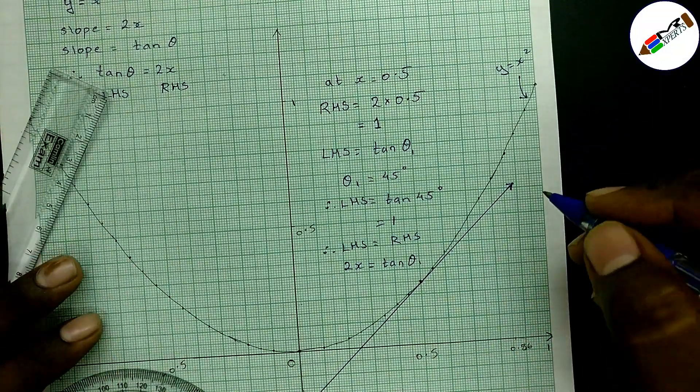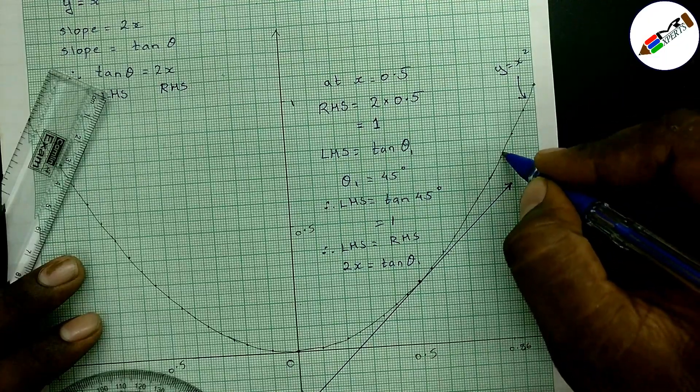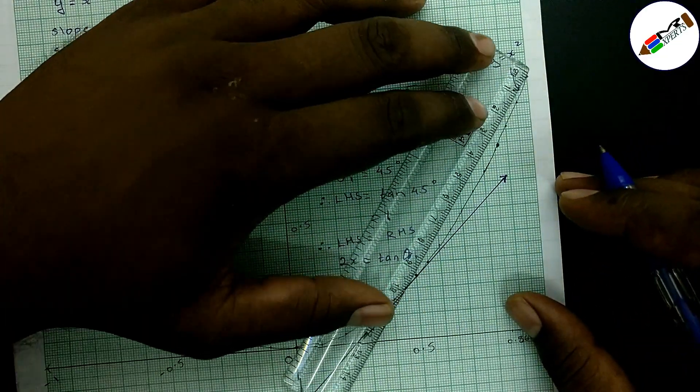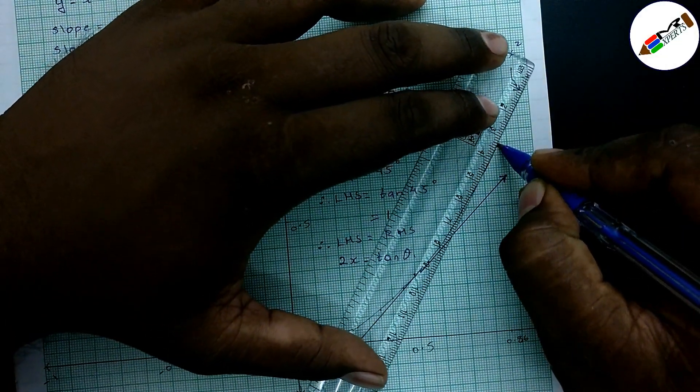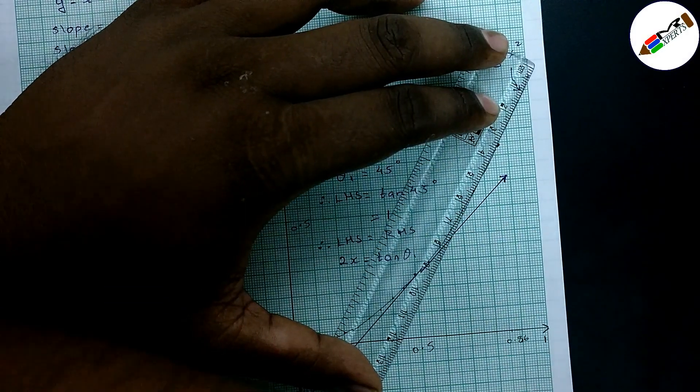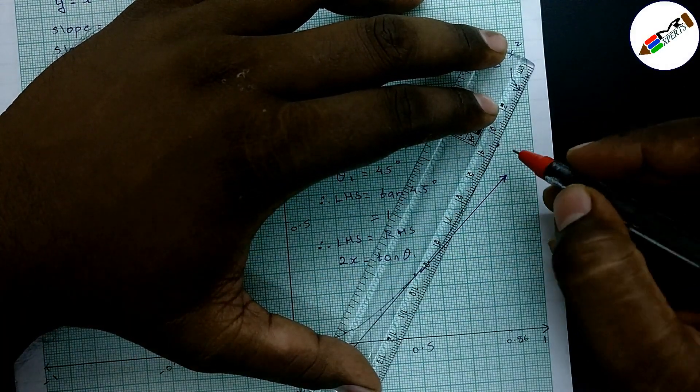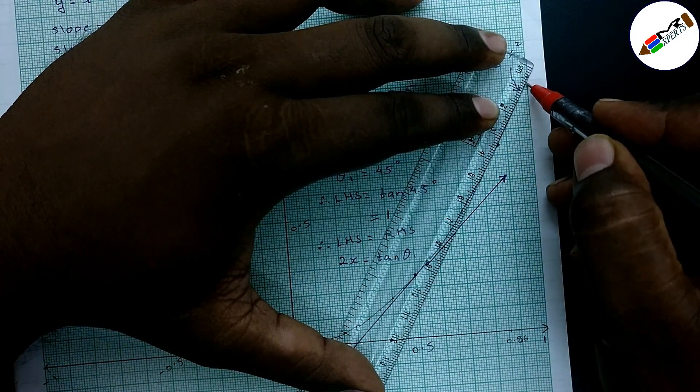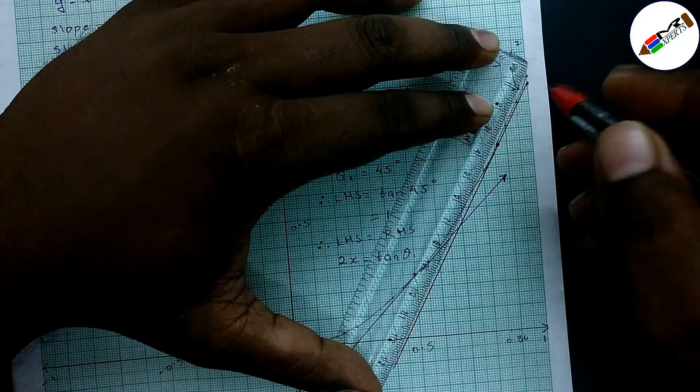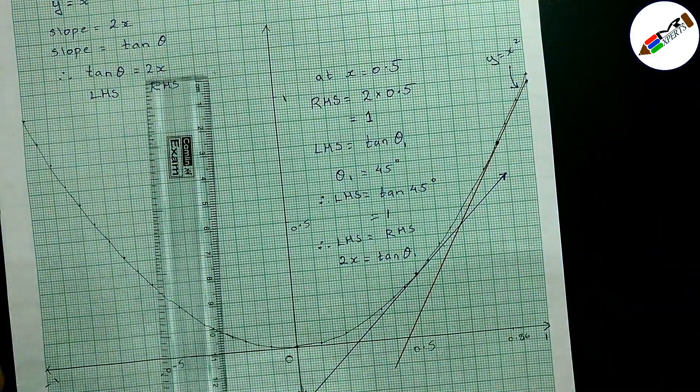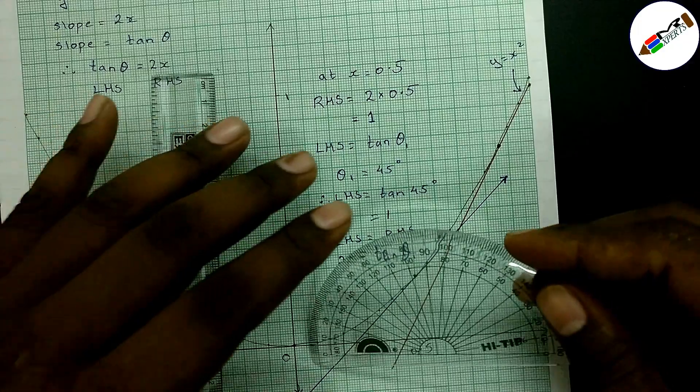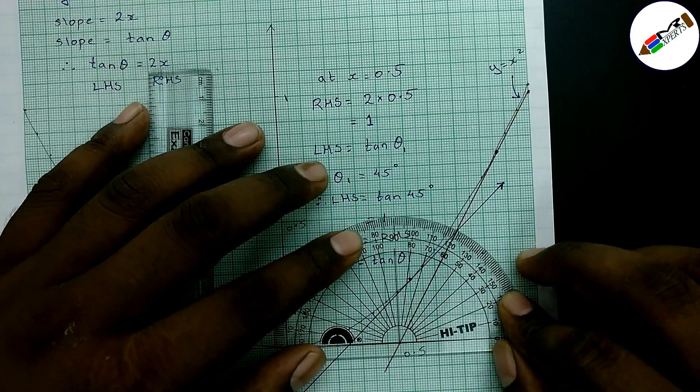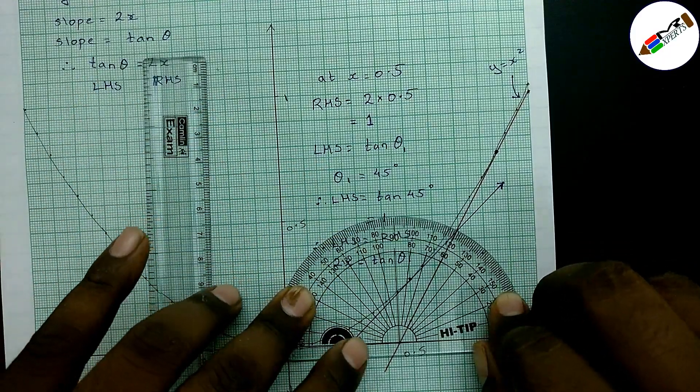In this case theta 1. Now, for different values of x there should be different value of tan theta. Let me mark another point. Here it is second point which is x is equal to 0.86 and let us try and draw a tangent over that point. Watch closely. We are drawing the tangent. Here the tangent is drawn. Now, this tangent will also make some angle with the positive direction of x axis. Let us measure that. As you can see it is exactly 60 degrees.